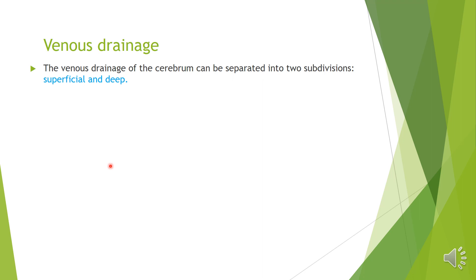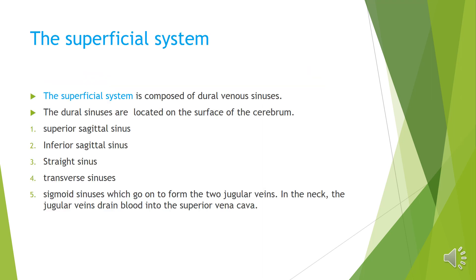The first part was the arterial supply — anterior and posterior circulation. Now let us come to venous drainage. Venous drainage includes two sub-systems: the superficial system and the deep system. The superficial system is composed of dural venous sinuses.